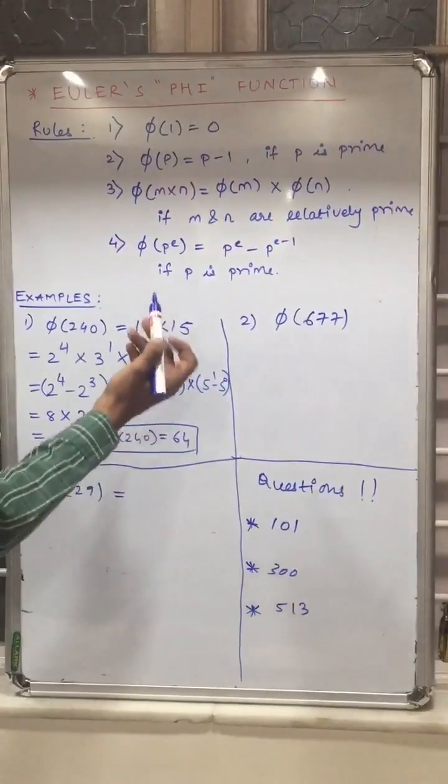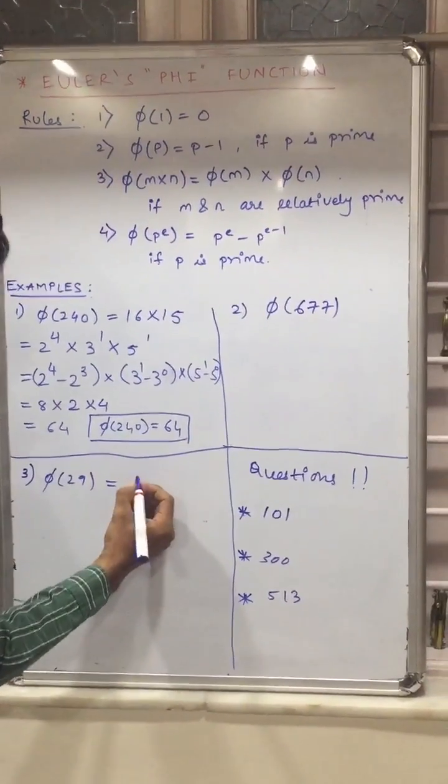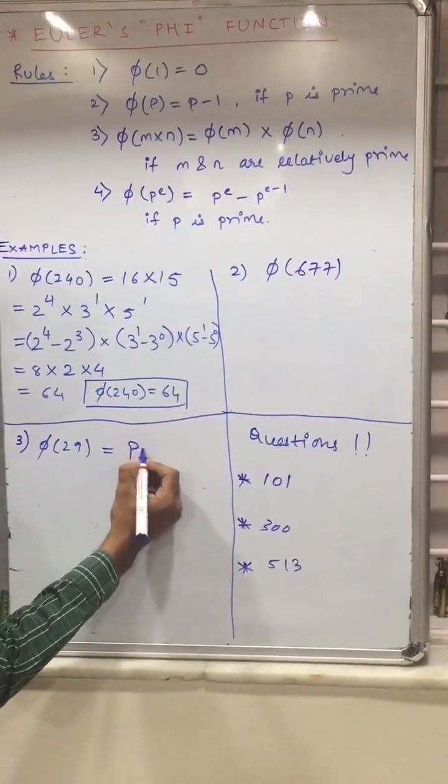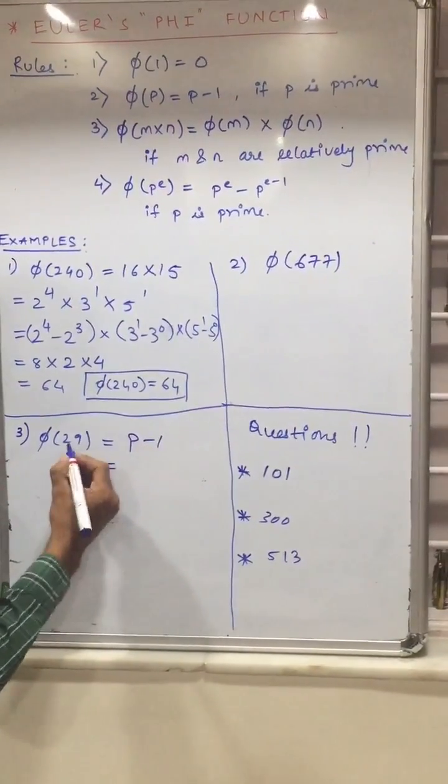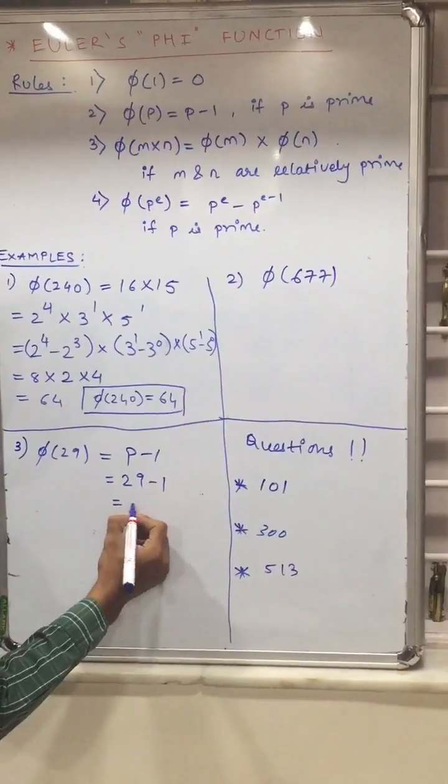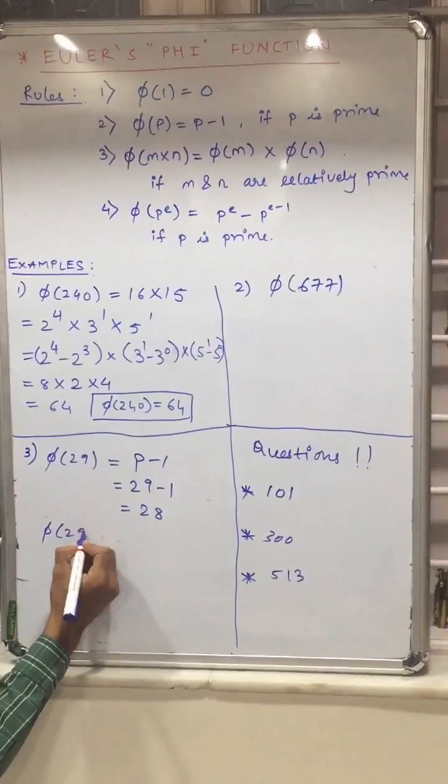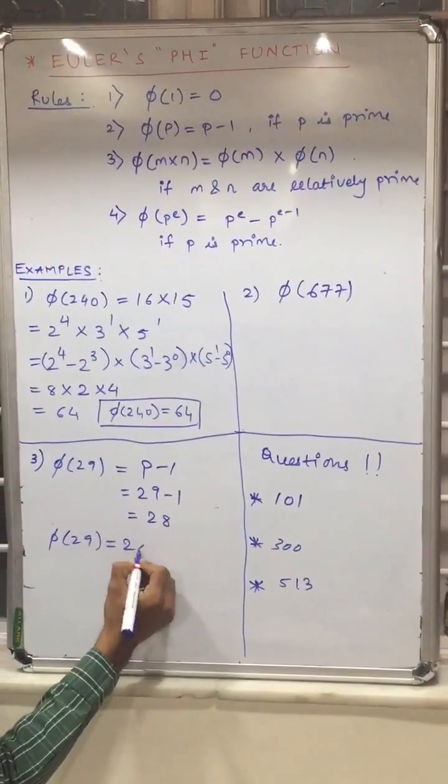So you have to apply rule number 2 here. It will be p minus 1. Since 29 is a prime number, it will be 29 minus 1, which is equal to 28. So phi of 29 is equal to 28.